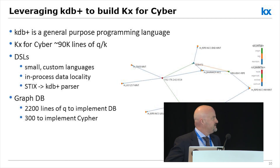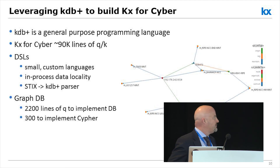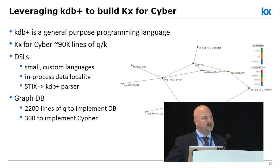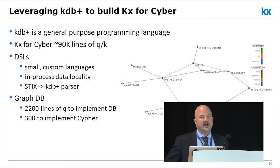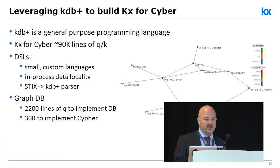Graph data is becoming increasingly important — that's a BGP hijack detection graph being shown. We built a complete graph database implementation on top of KDB+ in about 2,200 lines of Q, and then about 300 lines of Q to implement Cypher — the language used by Neo4j, one of the top commercial graph databases. The goal is that if you have existing knowledge in a domain, we don't want to force you to forget it and relearn — we want to reduce that impedance.